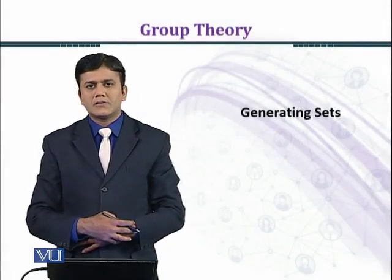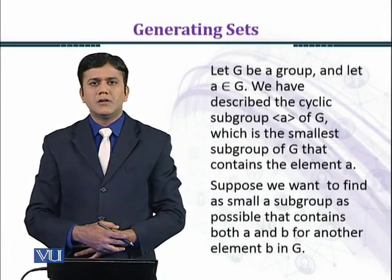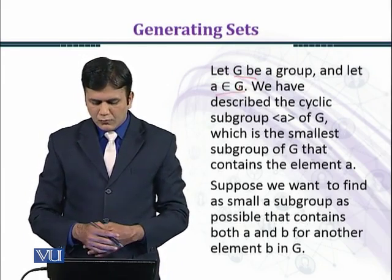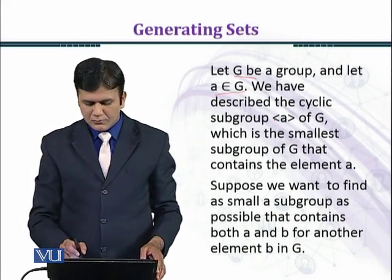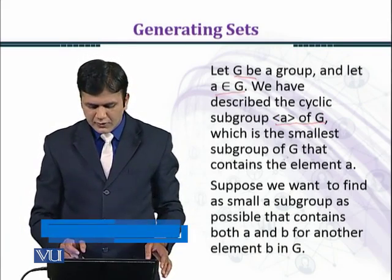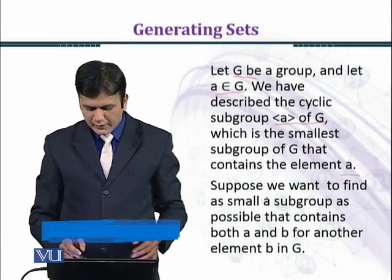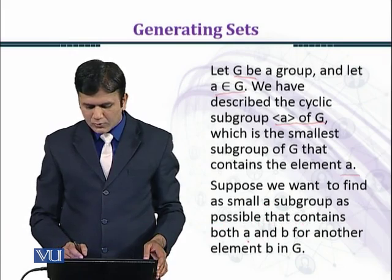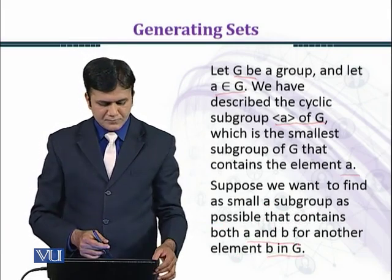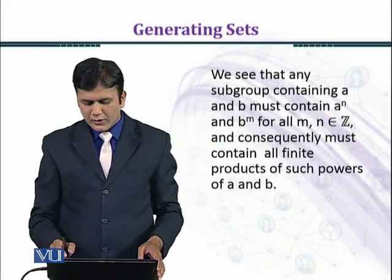In this module we shall discuss generating sets. Let G be a group and let a belong to G. We have described the cyclic subgroup generated by a of G, which is the smallest subgroup of G that contains the element a. Suppose we want to find as small a subgroup as possible that contains both a and b for another element b in G. We see that any subgroup containing a and b must contain a raised to power n and b raised to power m for all m and n belonging to Z.